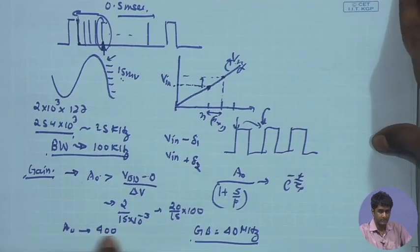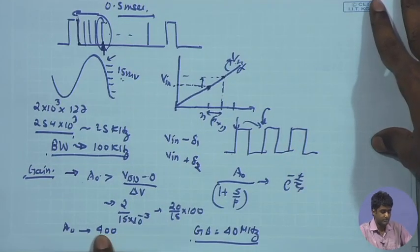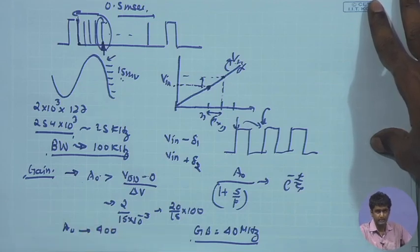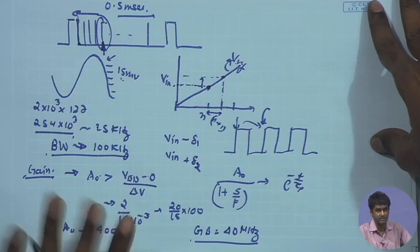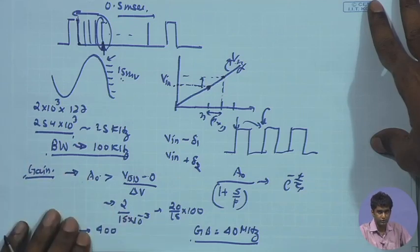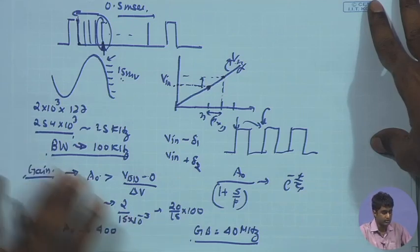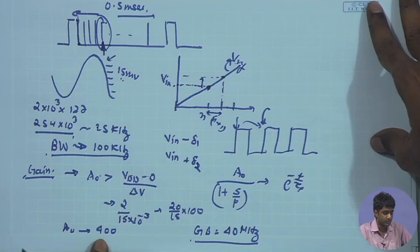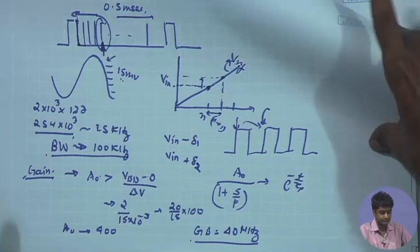The gain requirement of a few hundred can potentially be achieved by a single stage, but let us look at the issues to understand why a two-stage design may still be preferable for robustness.